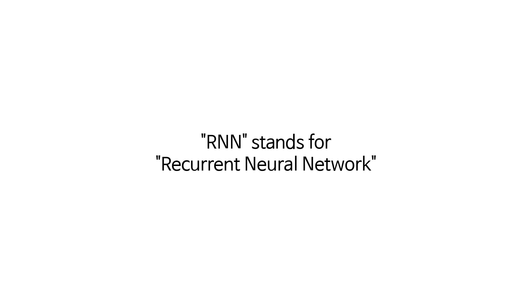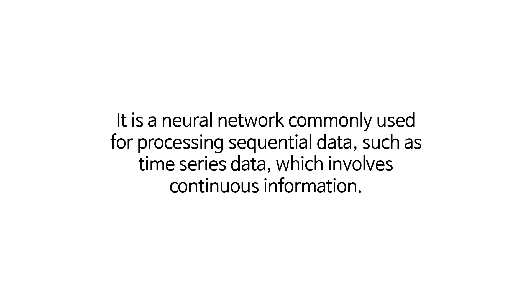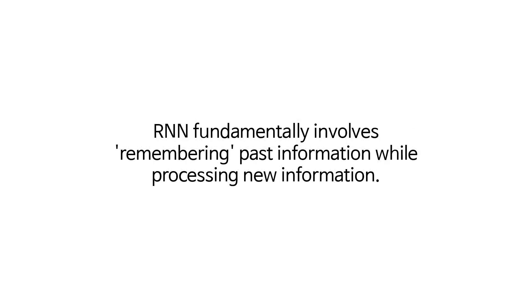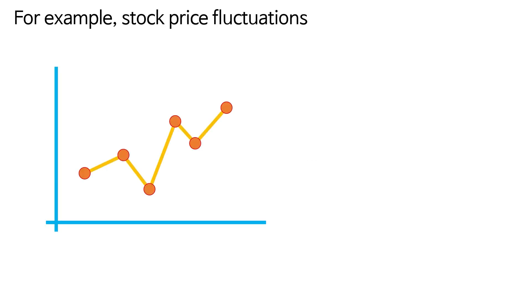RNN stands for Recurrent Neural Network. It is a neural network commonly used for processing sequential data, such as time series data, which involves continuous information. For example, stock price fluctuations or words in a sentence.